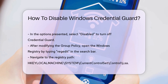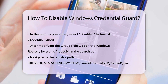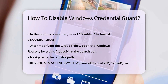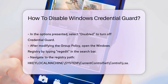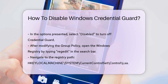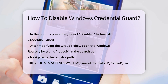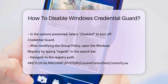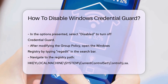After making changes in Group Policy, you must also check the Windows Registry. Open the Registry Editor by typing regedit in the Windows search bar. Navigate to HKEY_LOCAL_MACHINE, System, CurrentControlSet, Control, LSA. Look for the DWORD value named LsaCfgFlags. Change its value to 0 to disable Credential Guard.